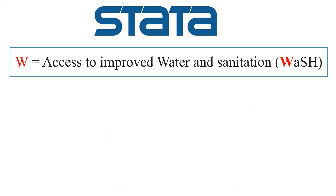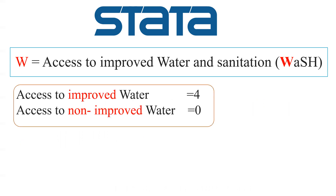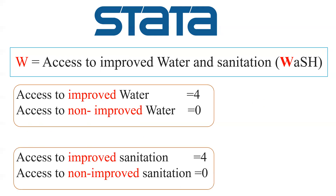For the W component — improved water and sanitation — if the source of drinking water is improved, then the score will be four, otherwise zero. Similarly, if access to sanitation is improved, the score will be four, otherwise zero. The maximum total for this component is eight points.